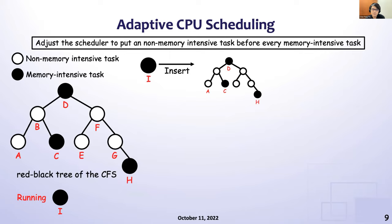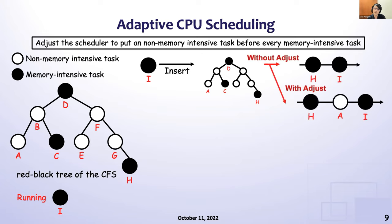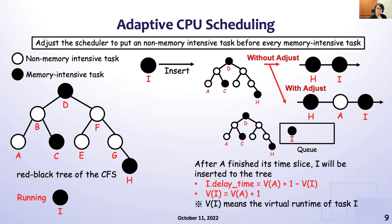For our second design, the key concept of adaptive CPU scheduling is to avoid scheduling memory-intensive processes continuously. We prioritize non-memory-intensive processes before running a memory-intensive process. For example, if H and I are both memory-intensive processes, they will not be run sequentially after our adjustment. Memory-intensive process I will be first put in a temporary queue, and a non-memory-intensive task, like A, will be scheduled first. To alleviate the penalty of delaying process I, our design allocates more time slices to those delayed processes.